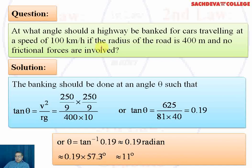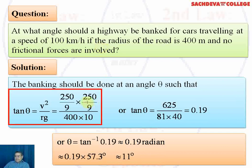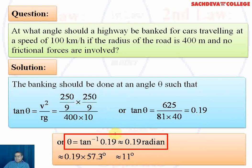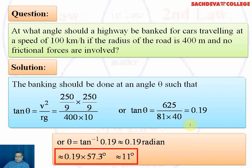We have to estimate the angle at which the banking of the highway is done — that is, the road is to be slightly raised up from the outer edge. We use the formula tan θ = v² / rg. Putting in the given values, tan θ is calculated to be 0.19, and θ = tan⁻¹(0.19), which is approximately 0.19 radians.